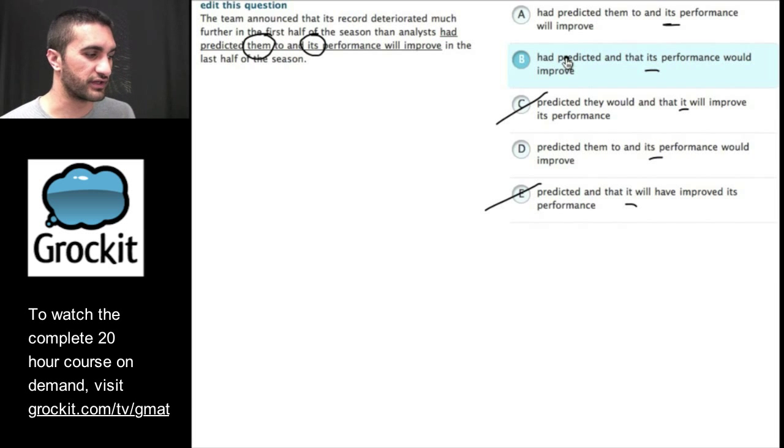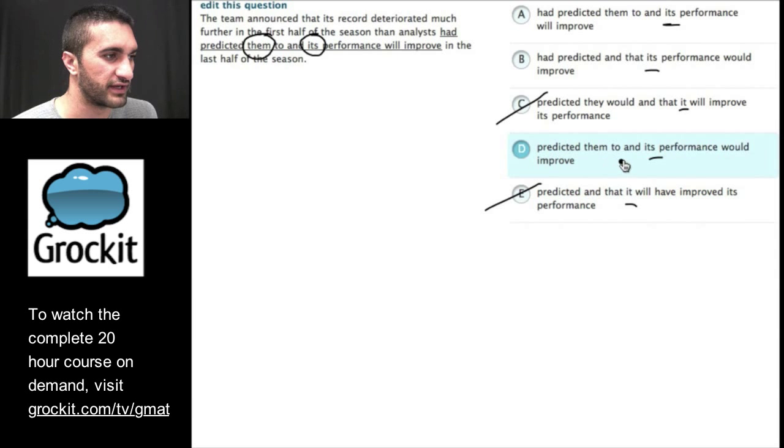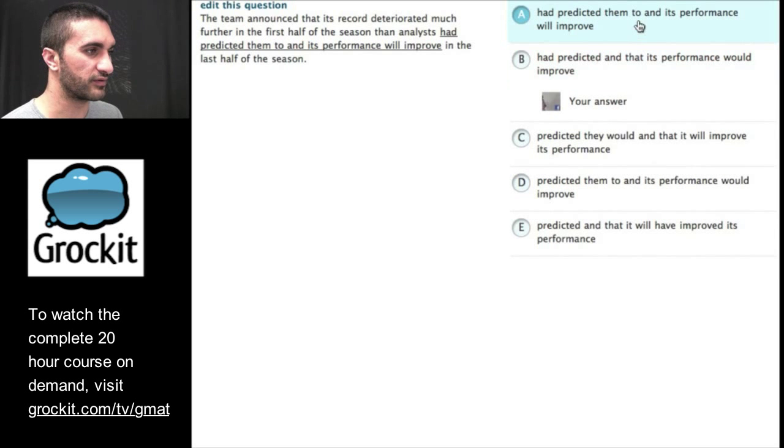So in this question, I don't really like the it will improve its and the it will have improved its. It's wordy and awkward. The it seems appropriate, so let's keep that. And the other difference is had predicted them to, had predicted, and that its improvement would improve. I don't like this them. I'm not sure what it's referring to. So let's get rid of these and go with B.